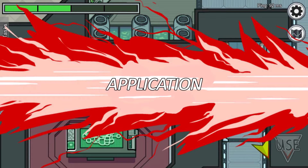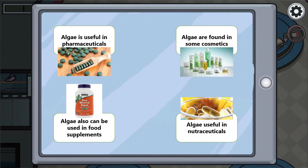There are many things that we can apply with algae. Here are some examples of general applications: algae is useful in pharmaceuticals, algae can also be found in some cosmetics, it can be used in food supplements, and algae is also useful in nutraceuticals.